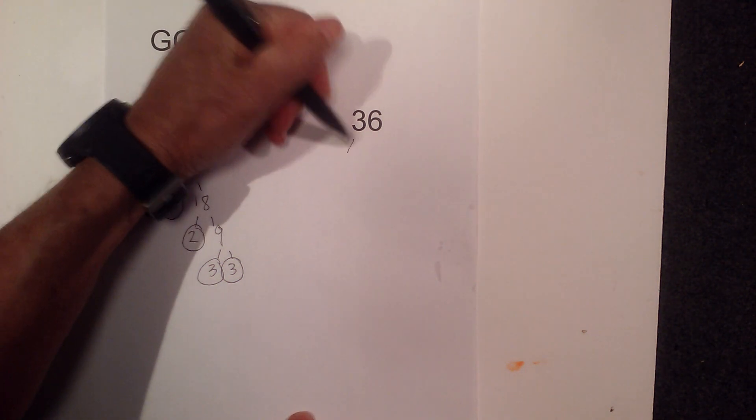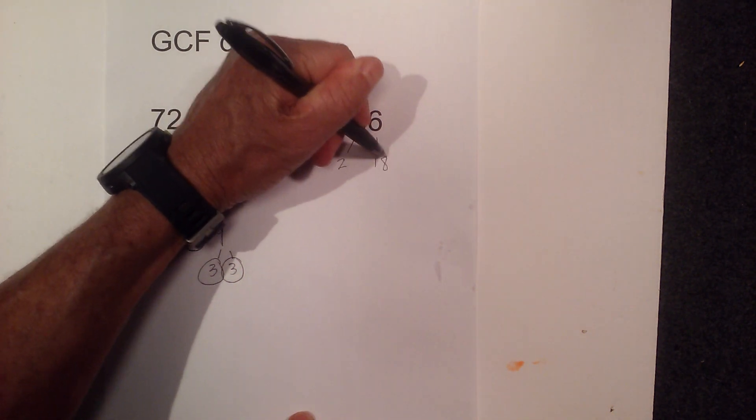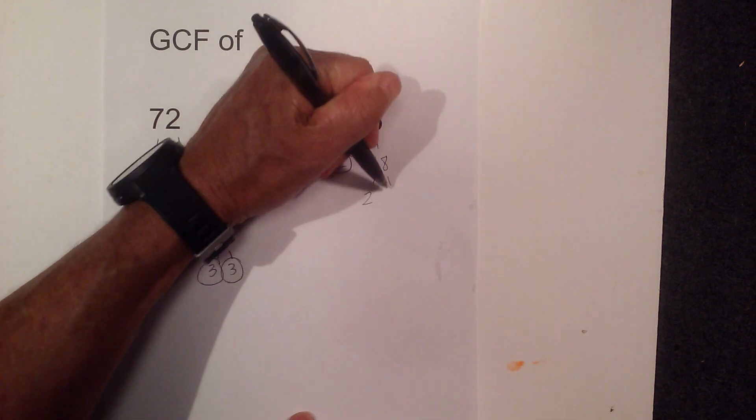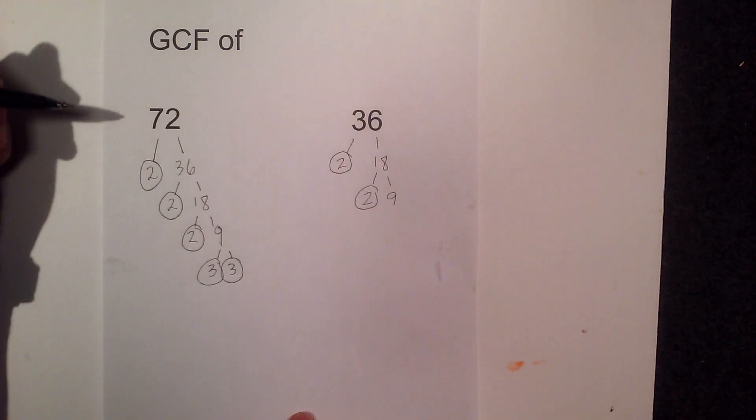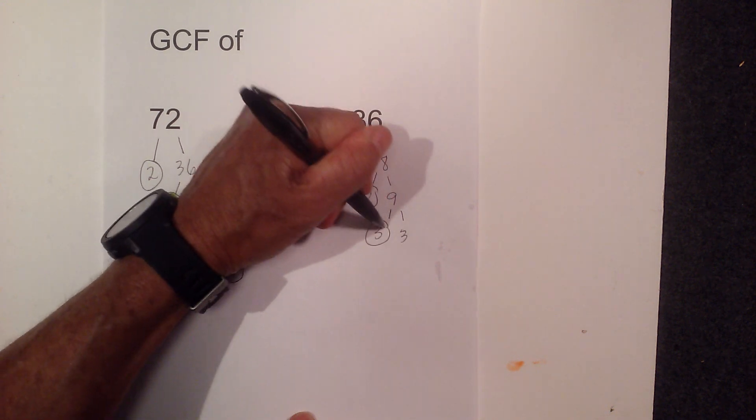Now for 36 it looks familiar. I can just go 2 times 18. Circle the 2 because it is prime. 2 times 9 is 18. Circle the 2, and then 3 and 3, and they are both prime.